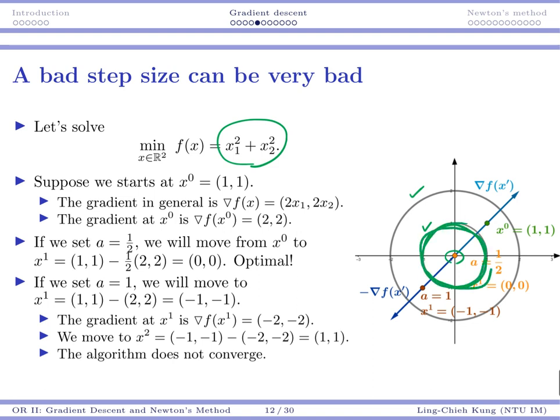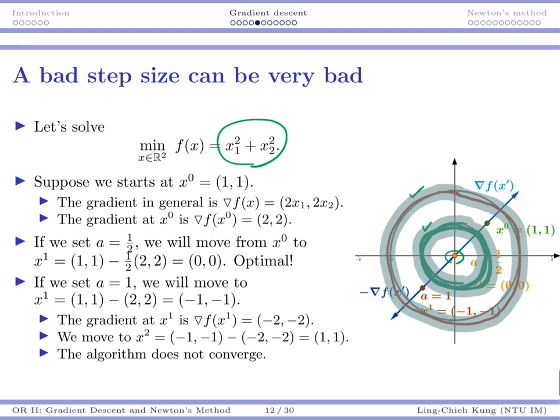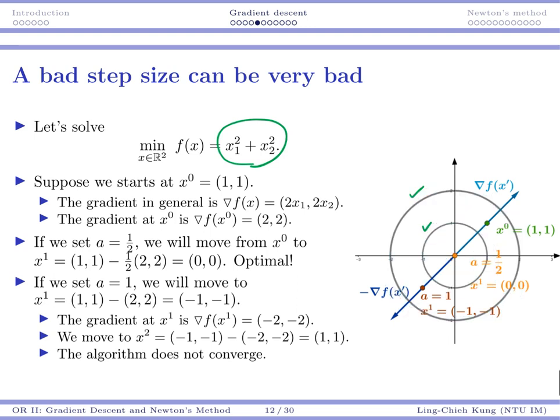On the graph, I depicted two circles. So they are some kind of iso-quant line. This x1 squared, x2 squared is some kind of parabola on your three-dimensional space. Along this circle, all the points on the circle gets the same objective value. So this is a contour map. So suppose we start at (1,1). Then let's try to find a gradient. So the gradient is 2x1, 2x2. And then the gradient at x0 is (2,2).